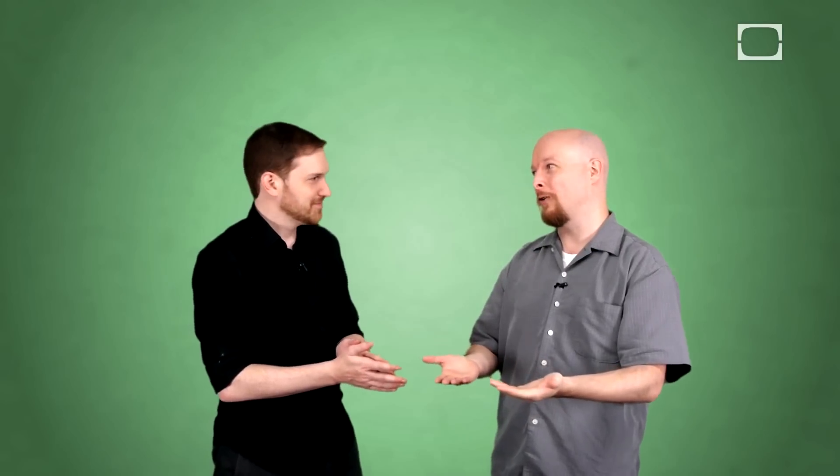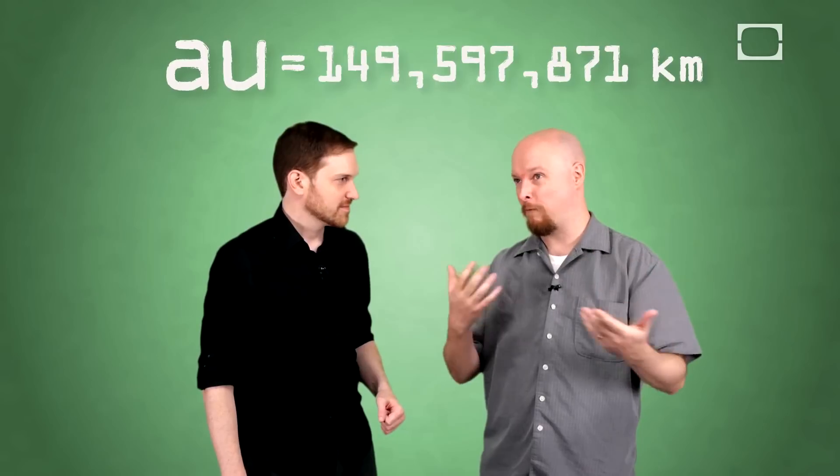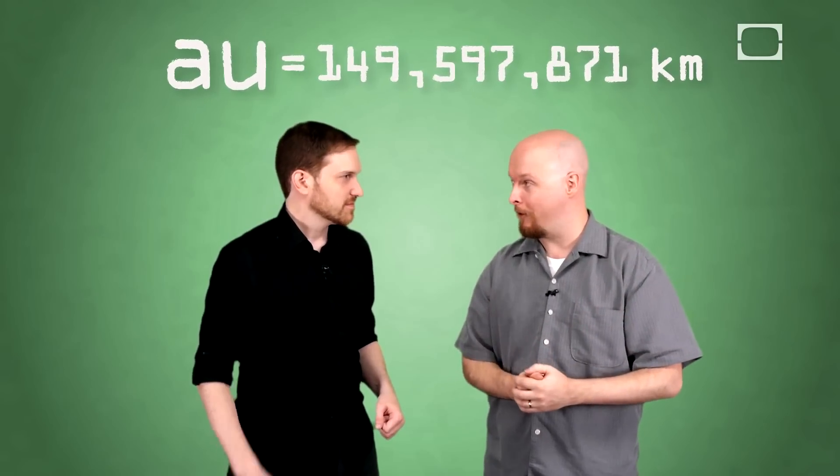So the astronomical unit refers to the distance between Earth and the Sun, the average distance, about 149 million kilometers or so.